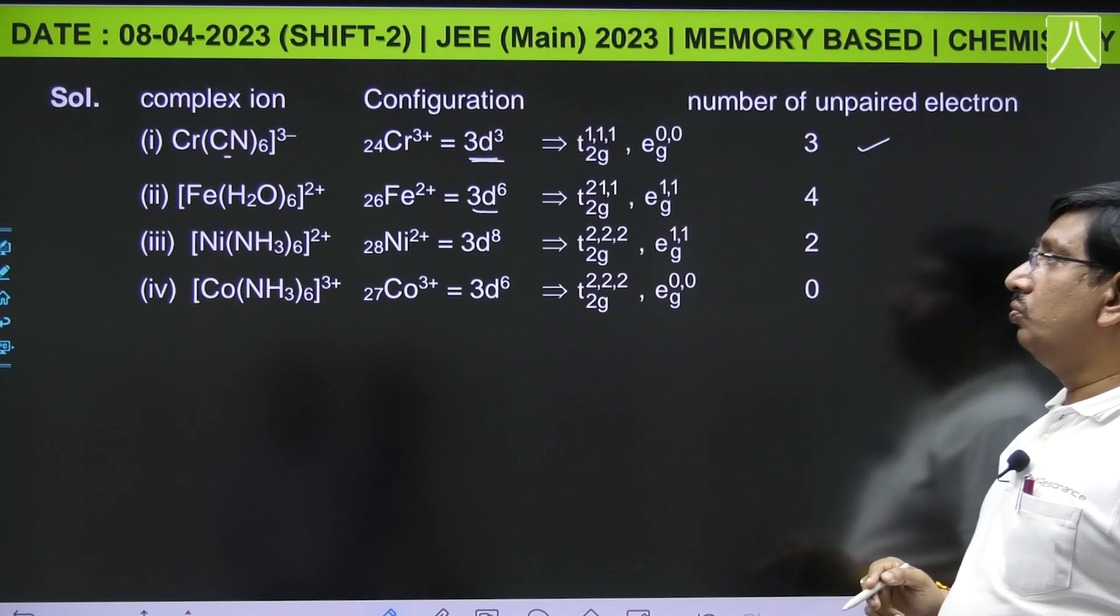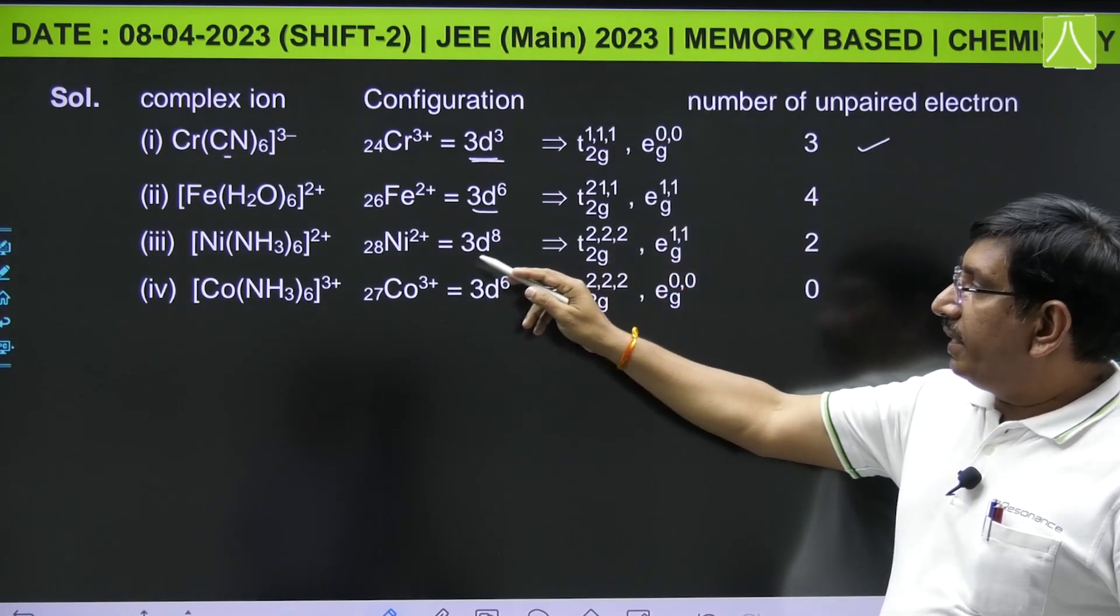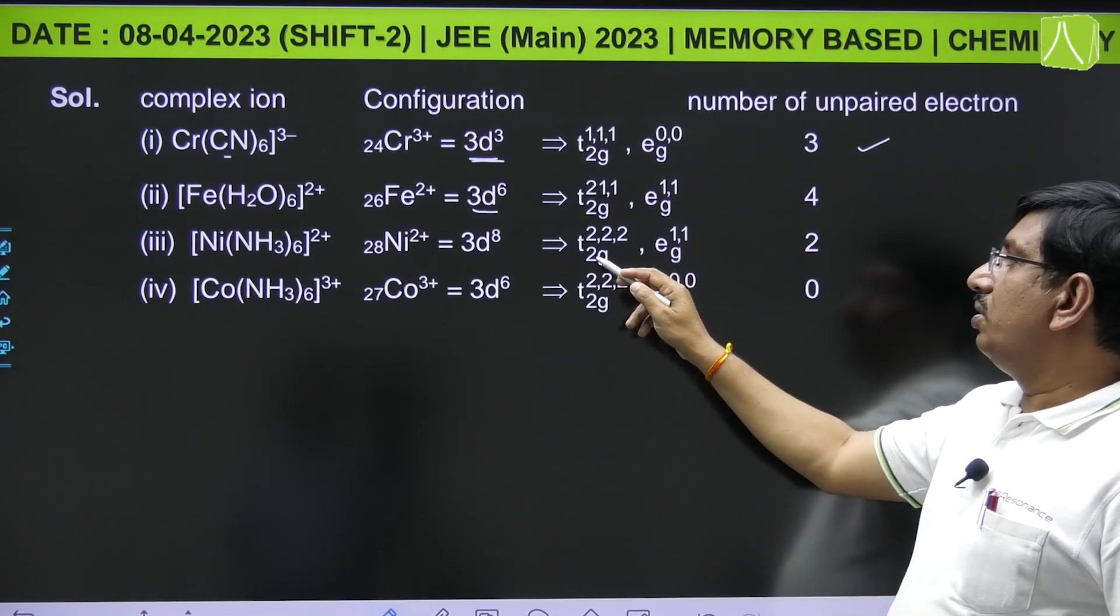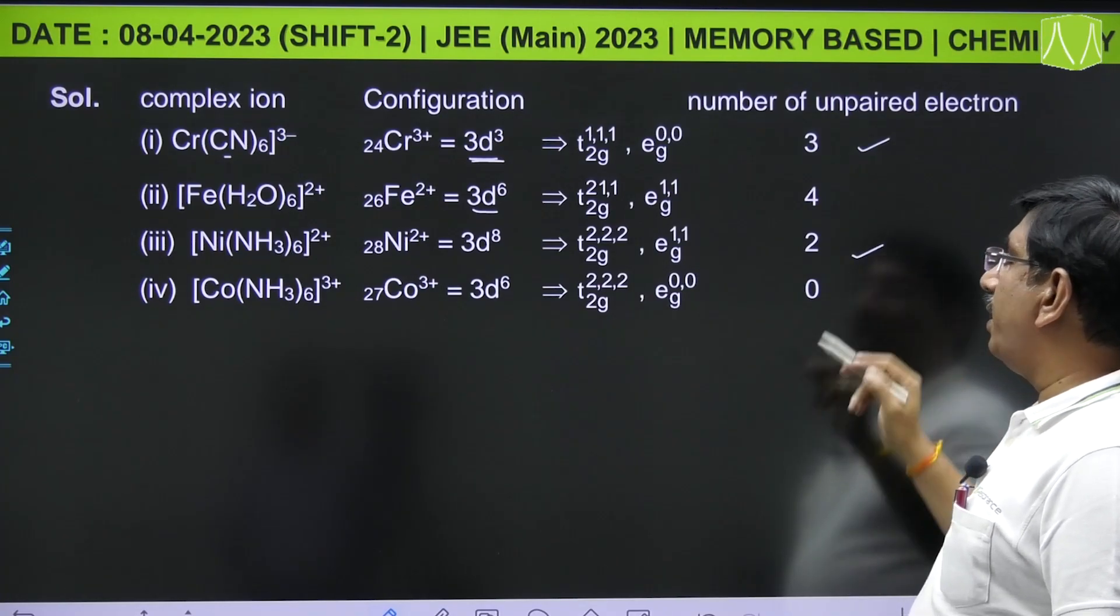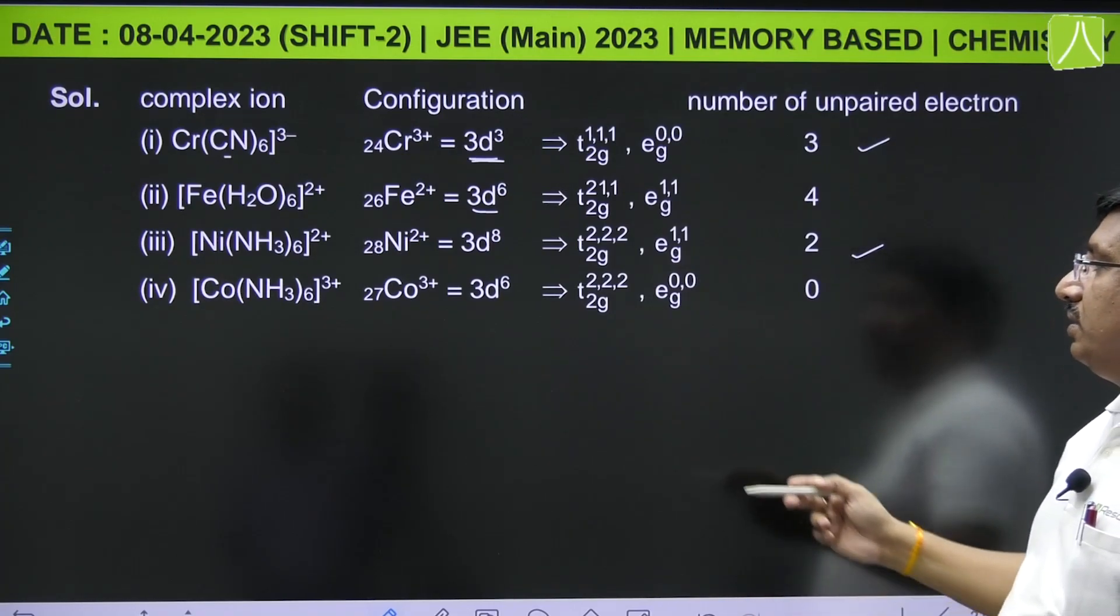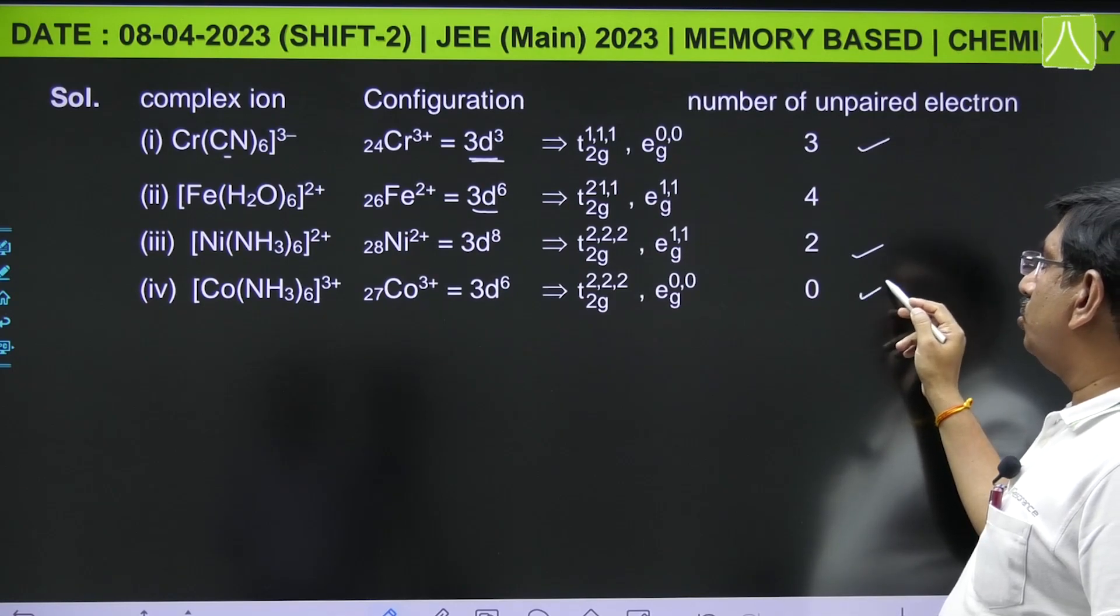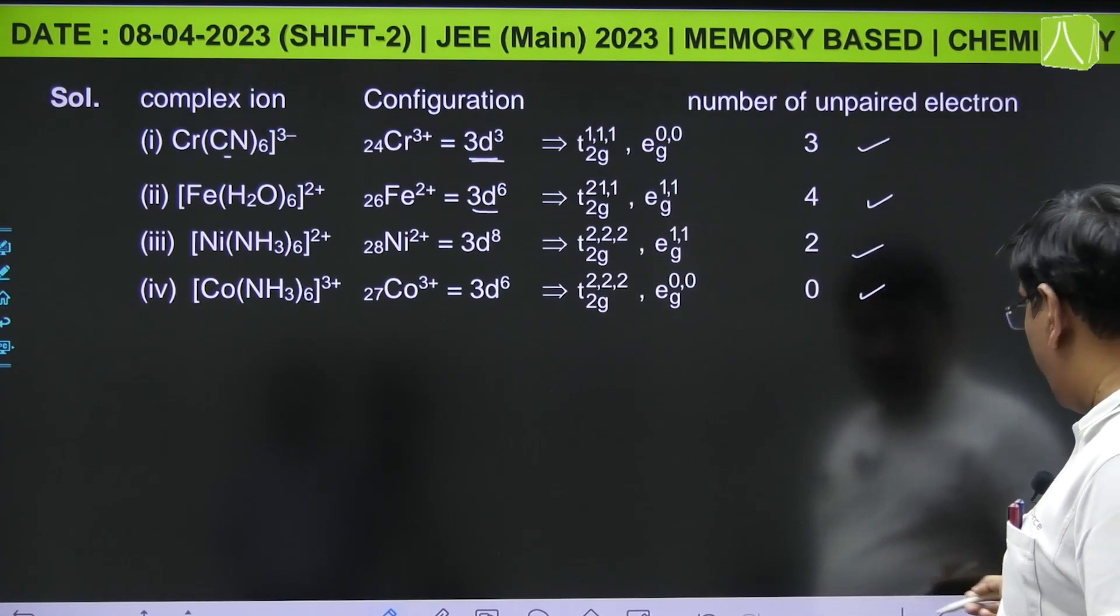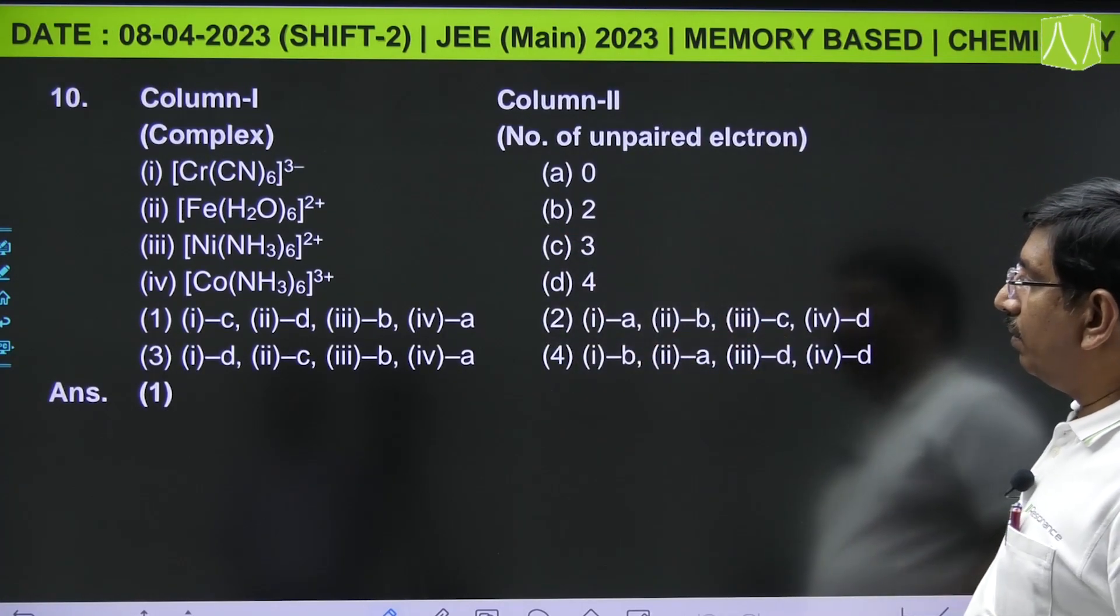Next, nickel in presence of strong field ligand has t₂g 2,2,2 and eg 1,1 configuration, and it has 2 unpaired electrons. And cobalt in +3 state, 3d⁶, t₂g 2,2,2 and eg 0,0, and it has 0 unpaired electrons. So we have to match this and the first one is the correct matching.